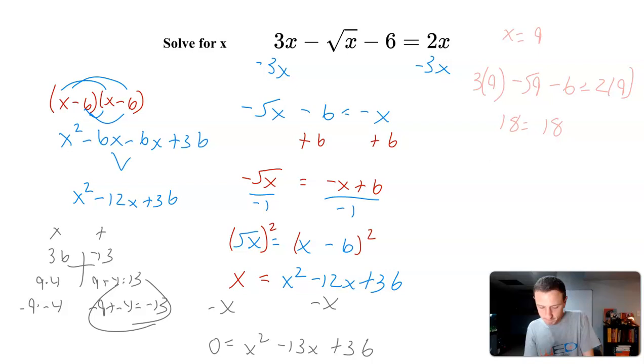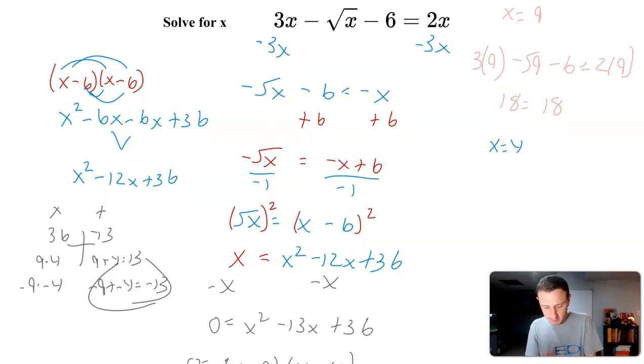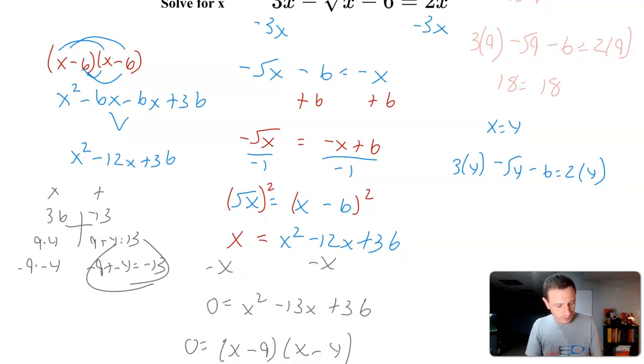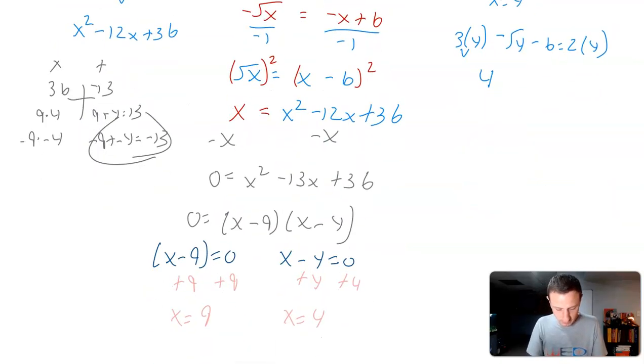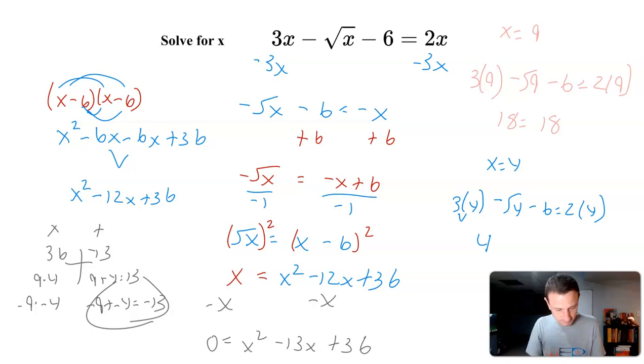Let's just check that. You never know. 3 times 4 minus the square root of 4 minus 6 equals 2 times 4. So it's going to be 12 minus 2 minus 6, which is 4, right? 3 times 4 is 12. Let me just double check this.